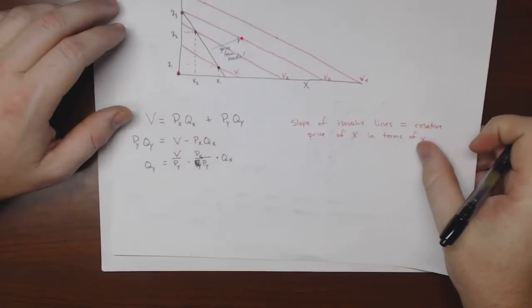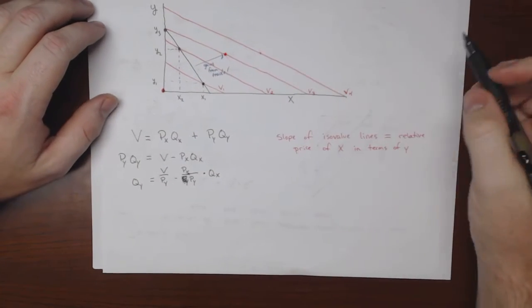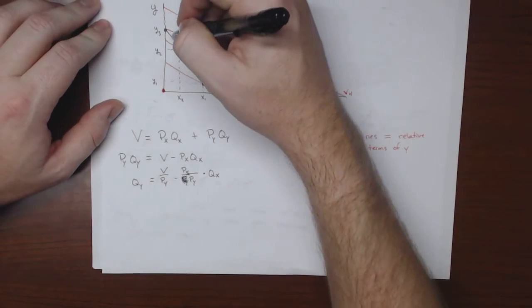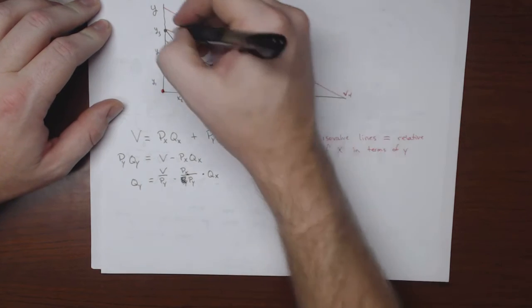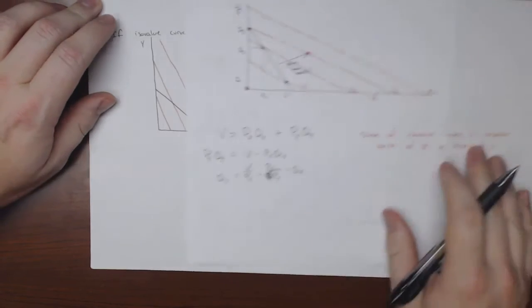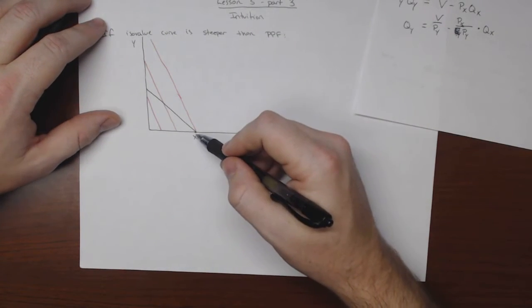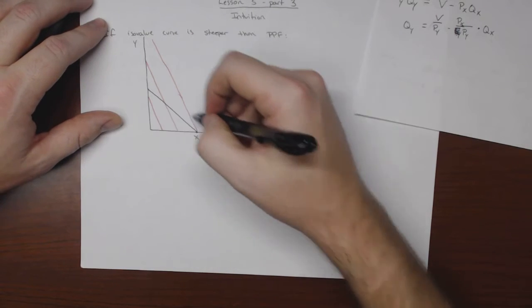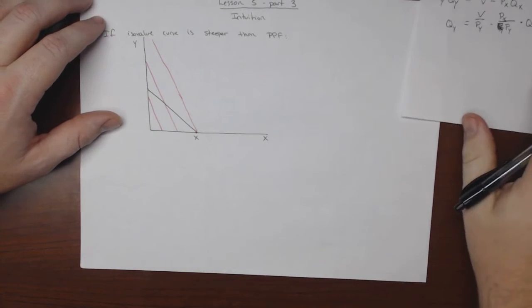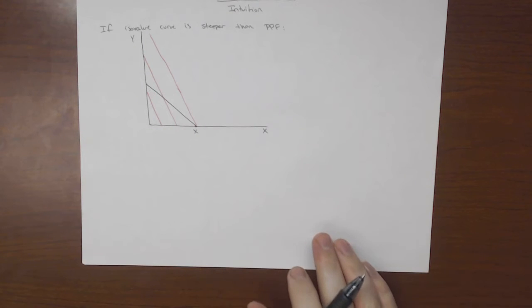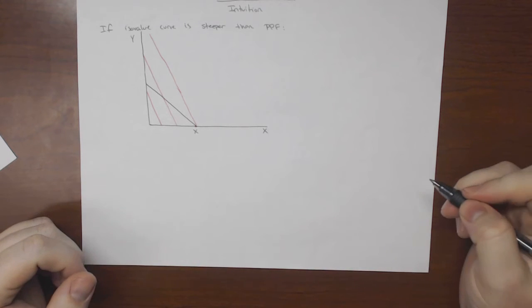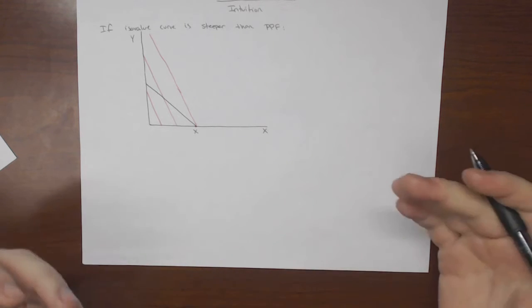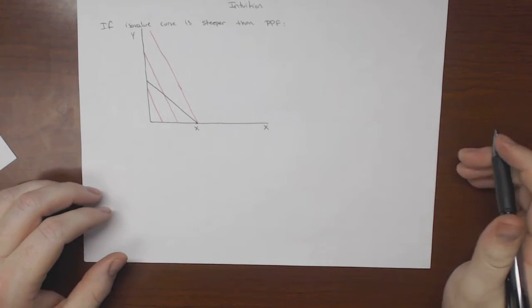So in this case here we said that if the PPF curve was steeper than the iso value curve, we produce y, and here if the iso value curve is steeper than the PPF, we produce x. So now we're ready to come up with a general equation for thinking about this such that we can actually have an algebraic expression that will tell us things.